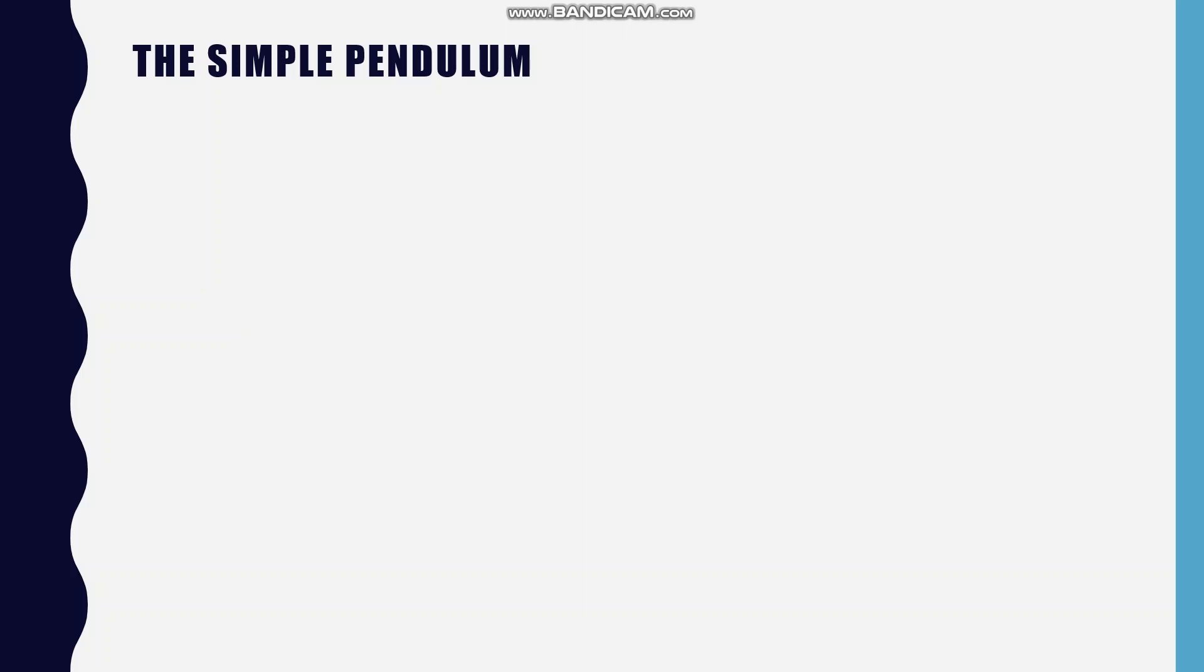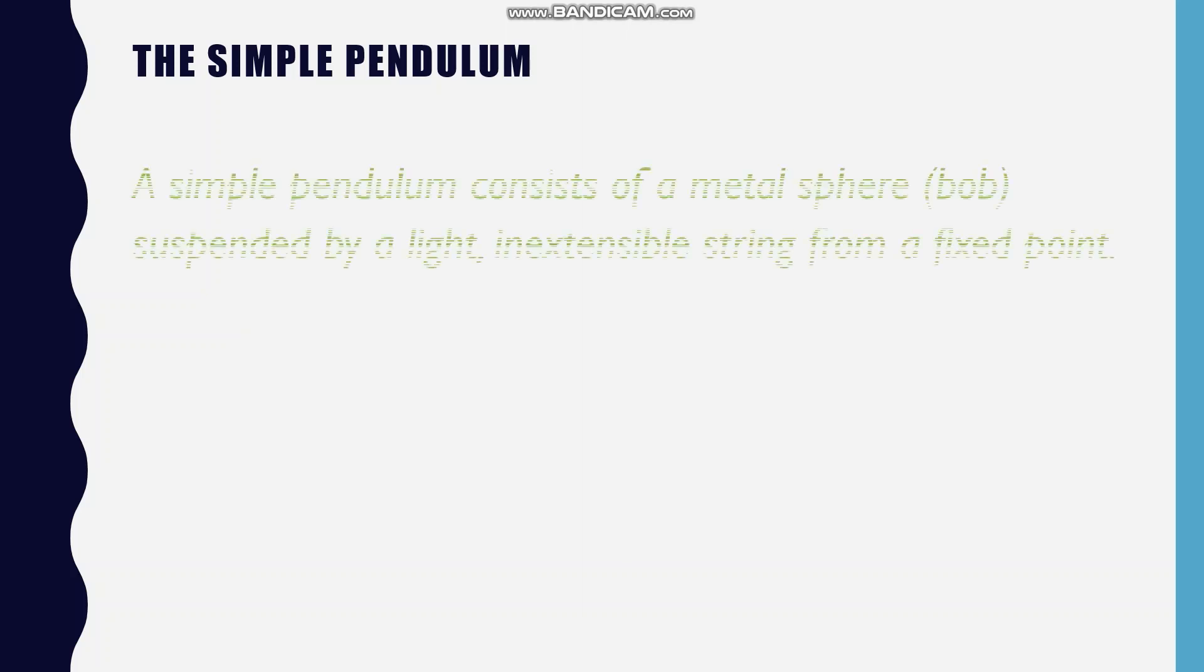First of all, what is the simple pendulum? A simple pendulum consists of a metal sphere which is called a bob suspended by a light inextensible string from a fixed point.